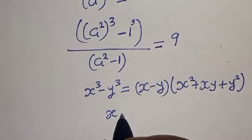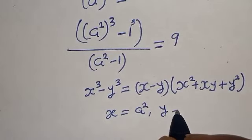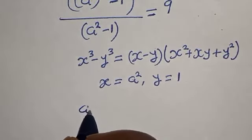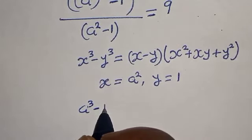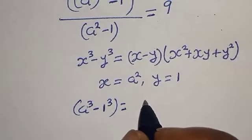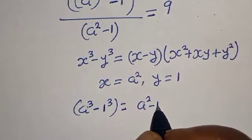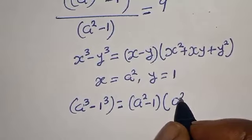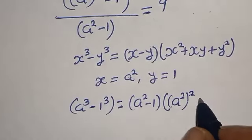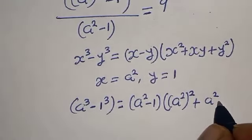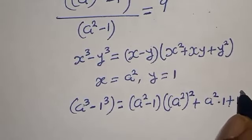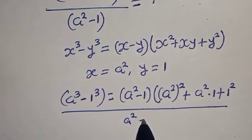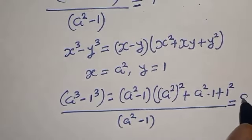In this case, x is equal to a squared and y is equal to 1. Substituting, the numerator a squared to the power of 3 minus 1 to the power of 3 becomes: a squared minus 1, times the bracket a squared squared plus a squared multiplied by 1, plus 1 squared. This is all over a squared minus 1, equal to 9.